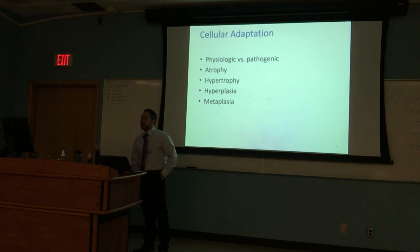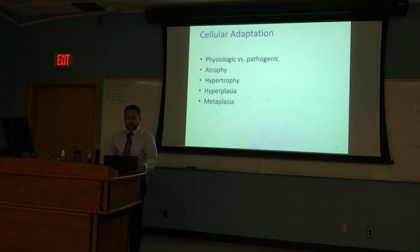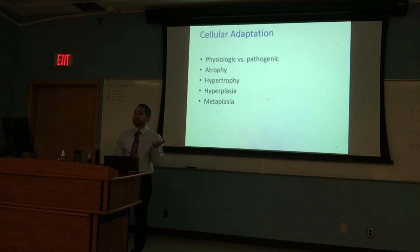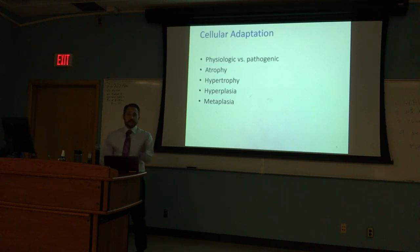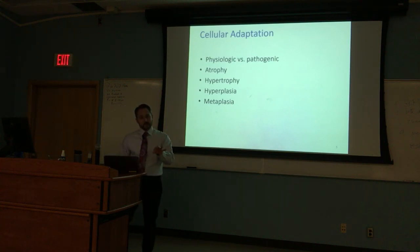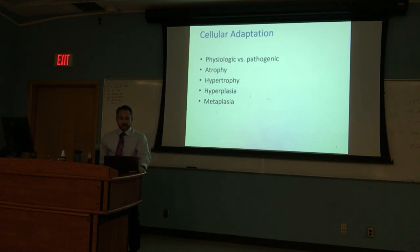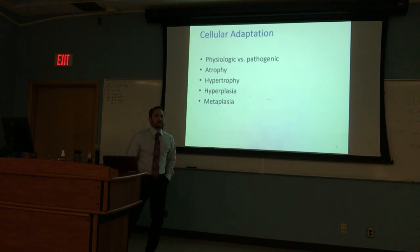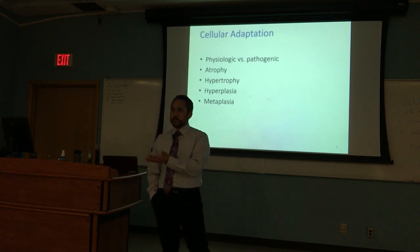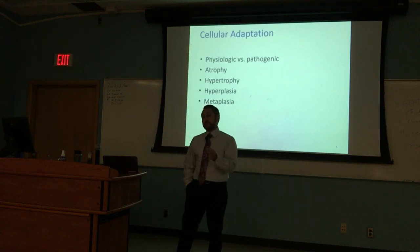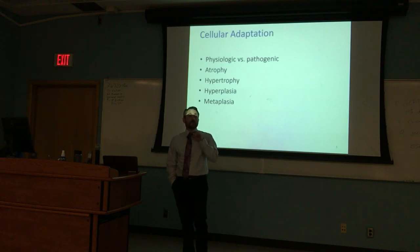Let's talk about cellular adaptations and compare physiologic versus pathogenic responses. A physiologic adaptation is the result of a normal process — think embryonic development, adolescence and puberty, or the female menstrual cycle. A pathogenic cellular adaptation is the result of a disease, like Barrett esophagus or premature gastric emptying causing a duodenal ulcer — the cells change, but they're not supposed to.